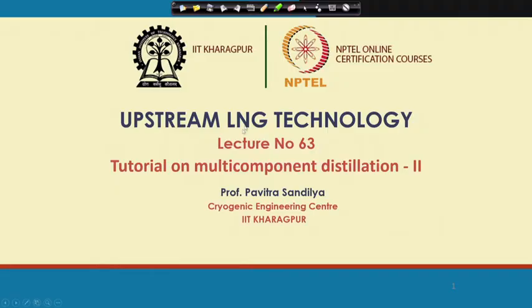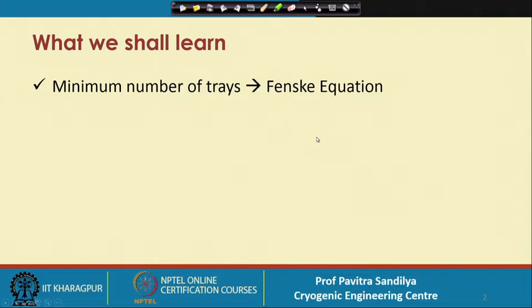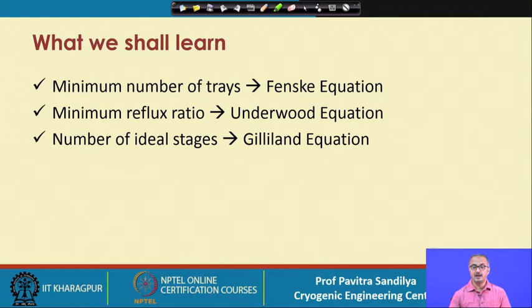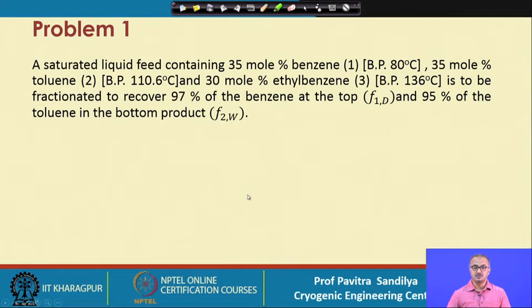Welcome. In earlier lectures, we have learned about the analysis and some problems on multicomponent distillation using shortcut methods. In this lecture, we shall be doing another set of problems on multicomponent distillation and shortcut methods for their analysis. This is a tutorial on multicomponent distillation, Part 2. We shall be learning about the application of the Fenske equation to find the minimum number of stages, the Underwood equation for minimum reflux ratio, and the Gilliland equation for the number of ideal stages.